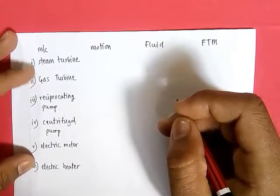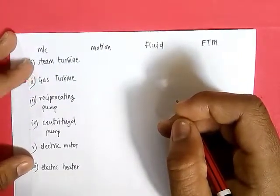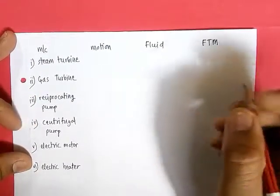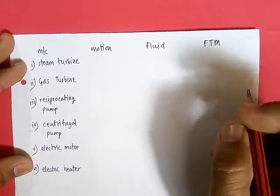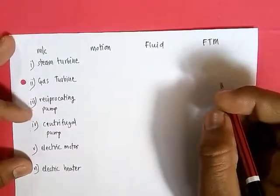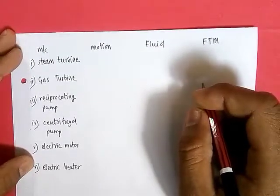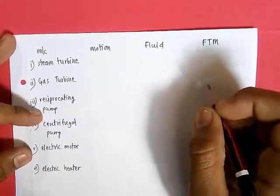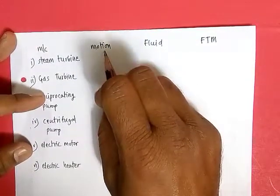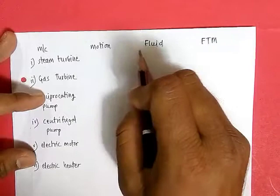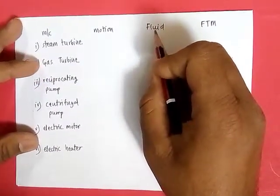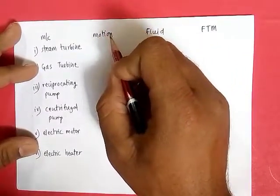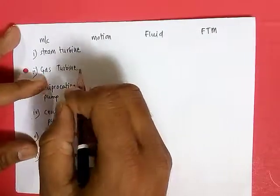Now let's check how to decide whether these machines are fluid turbo machines or not. The machines we know are: steam turbine, gas turbine, reciprocating pump, centrifugal pump, electrical motor, and electrical heater. We are going to check whether these machines are fluid turbo machines or not. We have two criteria. The first criteria is about motion, and the second criteria is about fluid — there should be some fluid flowing and the motion should be rotating.